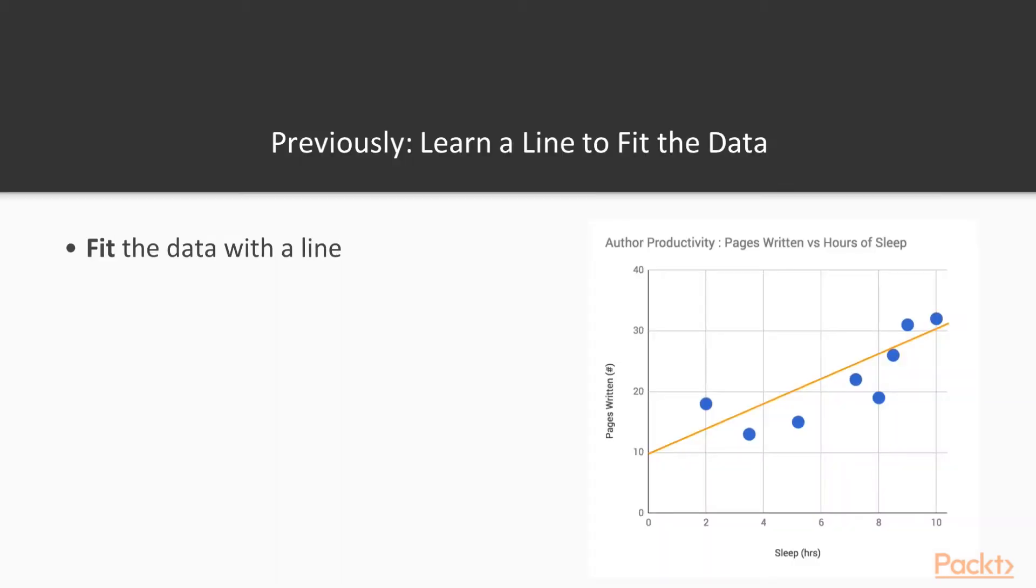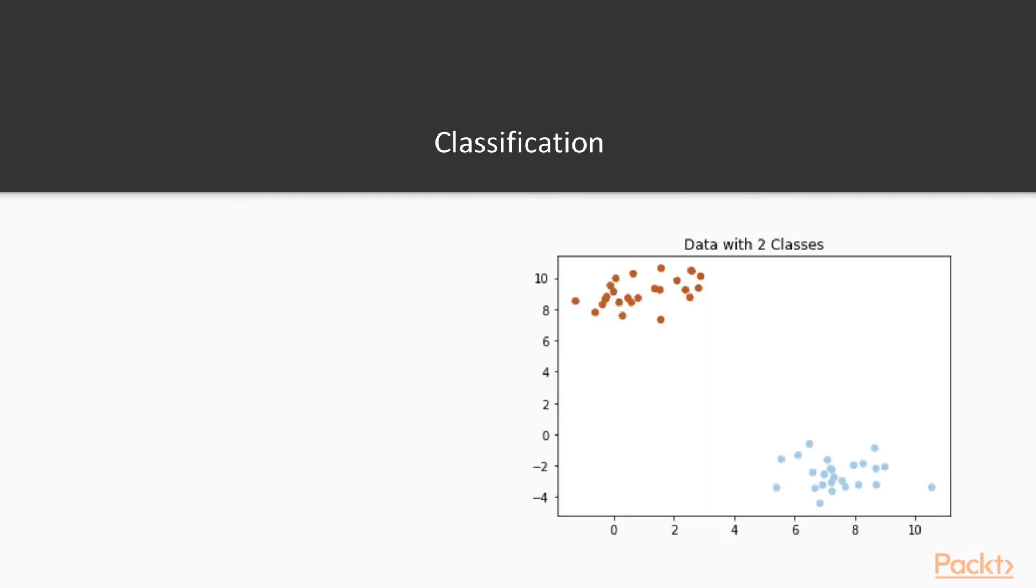So previously, in regression tasks, we were tasked with fitting the data with a line. We wanted to predict a continuous variable y given x. However, in classification, we aim to separate the data into two classes. So in order to do this, we predict a line that separates the data properly. And in this case, we call this binary classification because there's two classes that we're differentiating between.